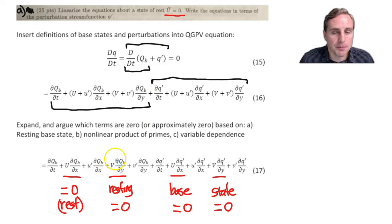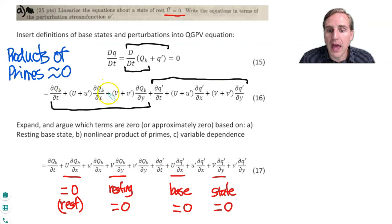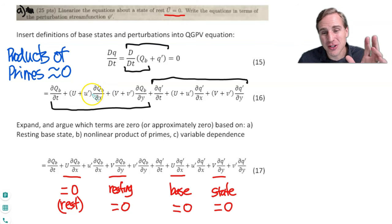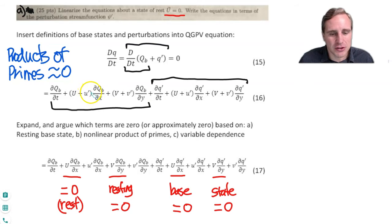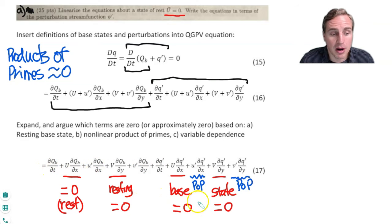Then we said in a previous video that all products of primes are approximately zero, because those are nonlinear terms in the perturbation variables. Since all perturbations are very small, the product of two of them is quadratic in the prime variable and thus very small — we assume that to be zero. So those product-of-prime terms are also eliminated.